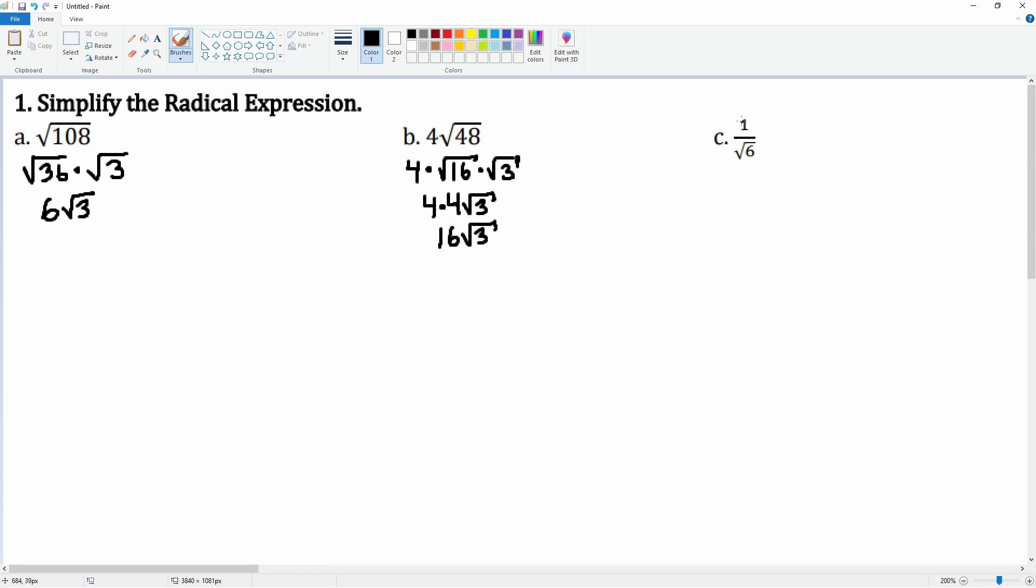Lastly we have 1 over the square root of 6. The way we rationalize this denominator is to multiply the top by radical 6 and the bottom by radical 6. That is equivalent to just multiplying by 1. 1 times radical 6 is just radical 6 on top. On the bottom it becomes radical 36.